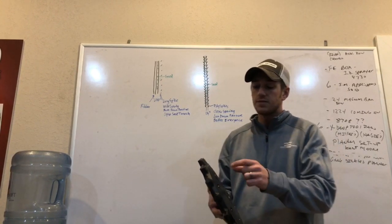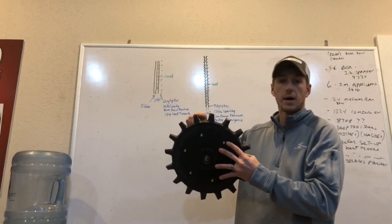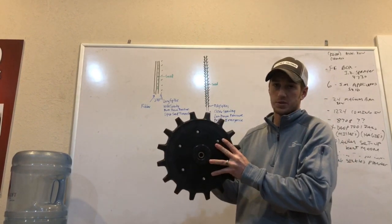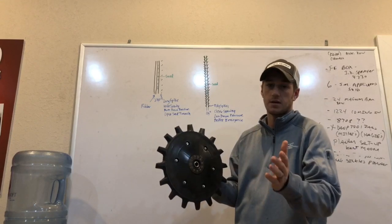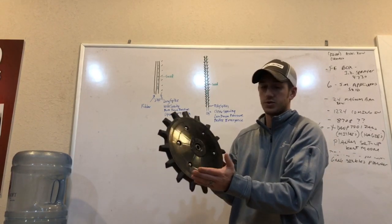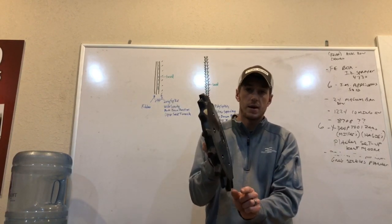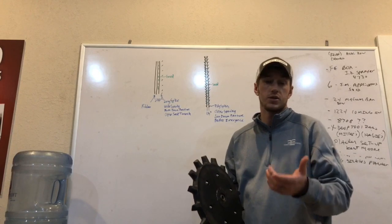I believe the secret behind these poly spike closing wheels is how short this spike is. What that short spike allows us to do, and I've said it a million times, is it allows us to bring this spike closer. The gap that we want down here at the bottom between your two spikes is an inch to an inch and a quarter.